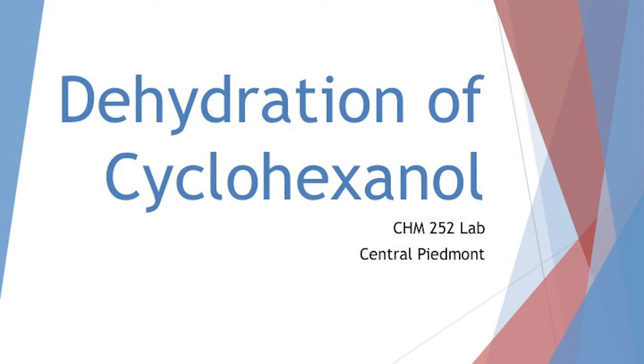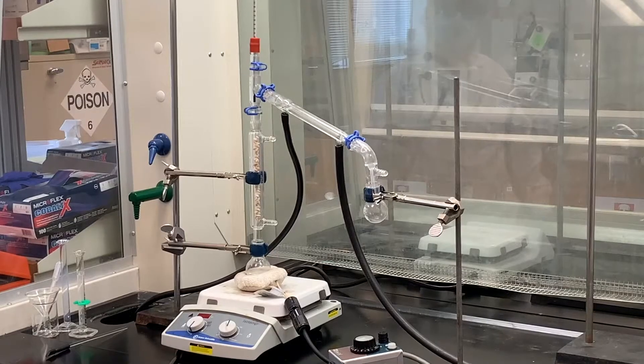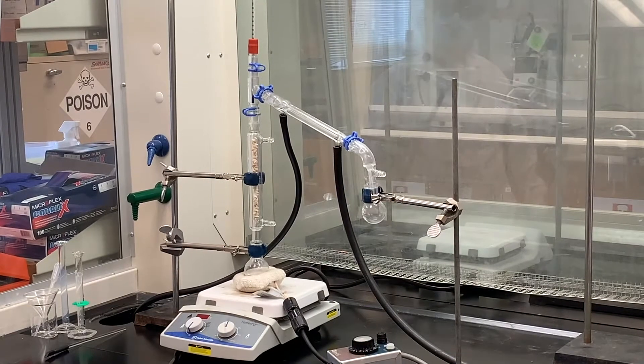Today's lab, we are going to dehydrate cyclohexanol, which is a secondary alcohol, to form cyclohexene, which will contain the carbon-carbon double bond, so an alkene.